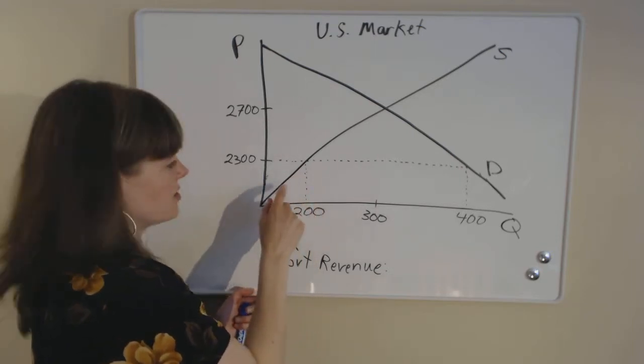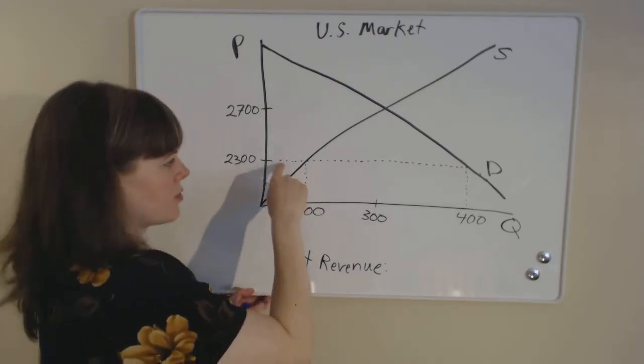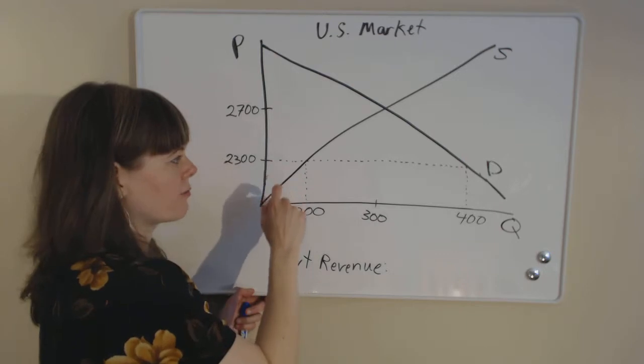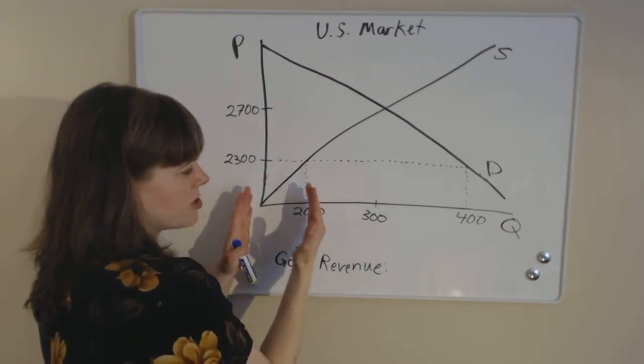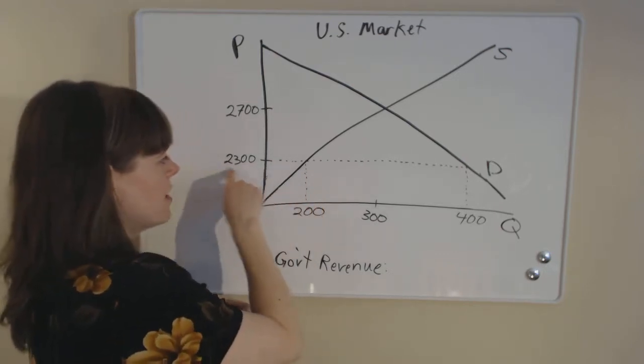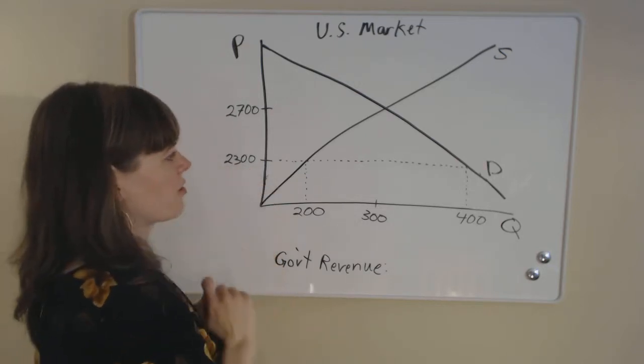They're going to be willing to produce because they can produce it for cheaper than $2,300, so they'll make some money from doing that. So all of these first 200 producers are willing to produce for this imported price of $2,300.